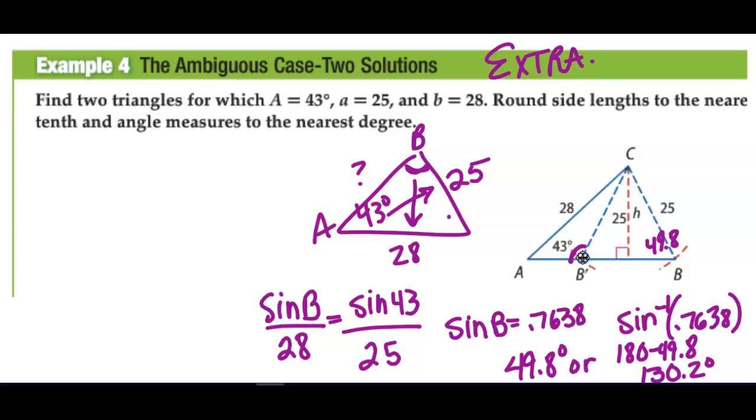Now a whole bunch of the time, you'll already have an angle that makes it so that this one doesn't work. But on this particular picture, it is possible that angle B in the triangle could be 49.8, or angle B in the triangle right here could be 130.2. The reason you would be eliminating one is if this had come out like 30 and 150, you can't have a 43 and 150 because it makes it bigger than 180. But you can have a 43 and a 130, and there would still be a little tiny angle left up here at C.